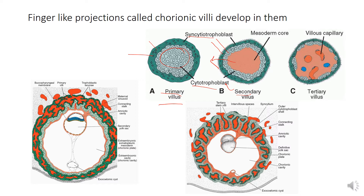By the end of the third week, blood vessels develop in the mesodermal core of the villi, which are now known as tertiary villi. The capillaries of the tertiary chorionic villi quickly establish connections with the blood vessels developing in the extra-embryonic mesoderm of the chorion and the connecting stalk.